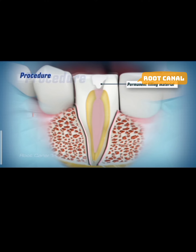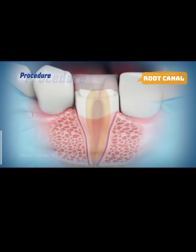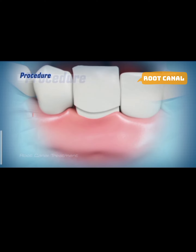The tooth is then restored with a permanent filling material. Root canal treated teeth tend to become brittle and can break because the blood supply to the tooth is removed during the procedure. Therefore, after a root canal treatment, the tooth should be protected with a crown to prevent the tooth from breaking in the future.